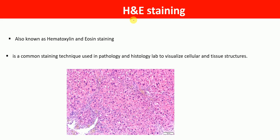In this lecture, I'm going to talk about H&E staining in detail. H&E staining, also known as hematoxylin and eosin staining, is a common staining technique used in pathology and histology labs to visualize cellular and tissue structures. A representative staining image of H&E staining has been shown here.